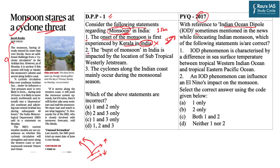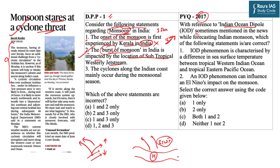Statement two says that the burst of the monsoon in India is impacted by the location of the subtropical westerly jet stream. This statement is correct because the burst of the monsoon is linked with the immediate withdrawal of the subtropical westerly jet stream from the Gangetic Plains. Till late May these jet streams exert high pressure over the Gangetic Plains, and when the ITCZ moves northward, their sudden withdrawal invites winds from the western coast, causing the monsoon to enter India with a sudden burst.